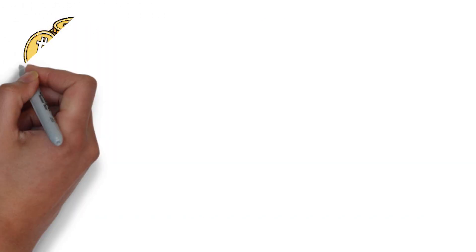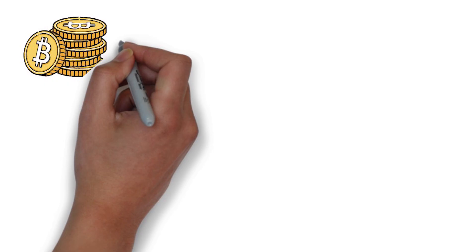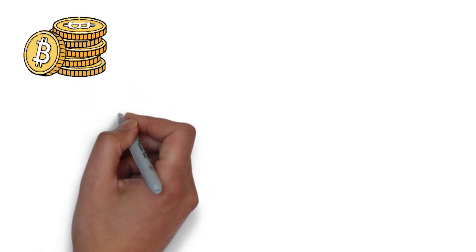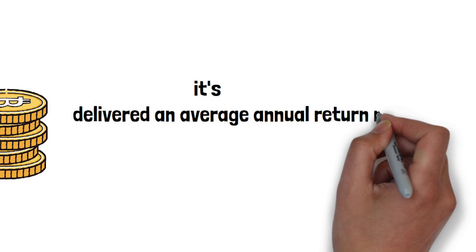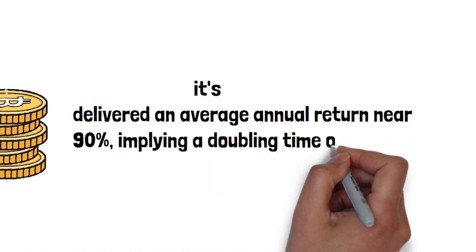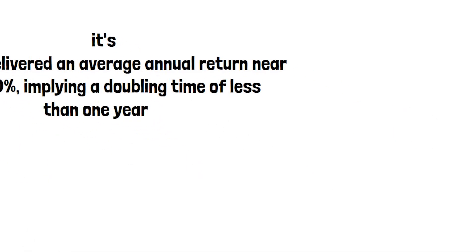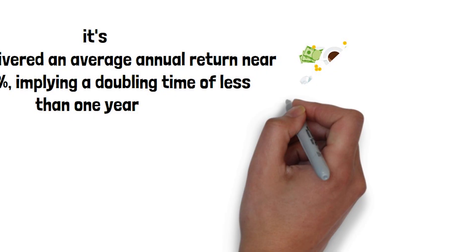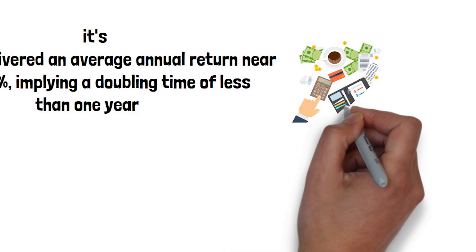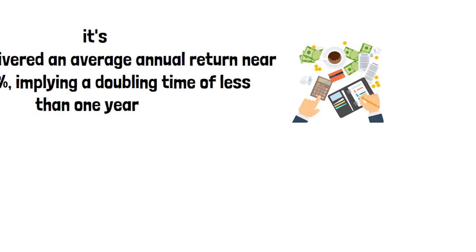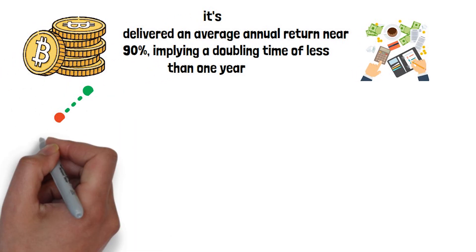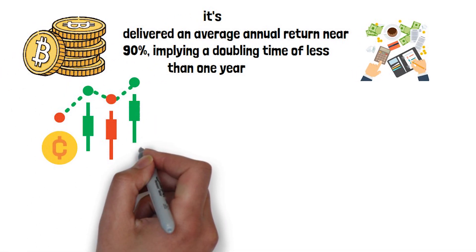At the other end of the spectrum are high volatility plays like Bitcoin. Over the past decade, it's delivered an average annual return near 90%, implying a doubling time of less than one year. Those numbers are historical and extremely volatile, so the rule of 72 doesn't predict whether you'll avoid big crashes. Prices can swing so sharply that gains may disappear in months.